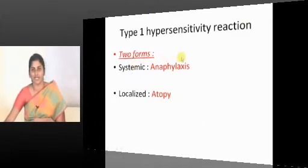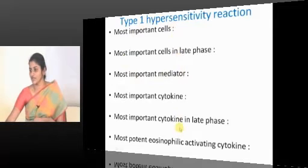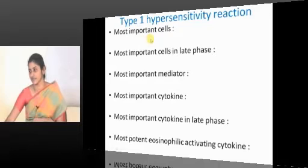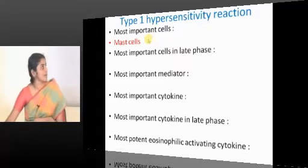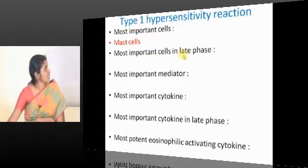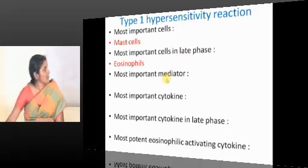Two forms: systemic form is anaphylaxis, localized form is atopy. Each and everything is a question, each and everything is an MCQ. Most important cells of Type 1 hypersensitivity reaction are mast cells. Most important cells in late phase are eosinophils.